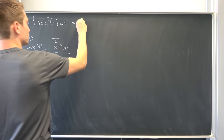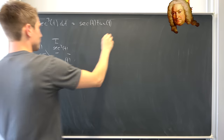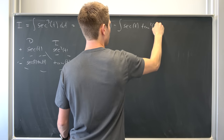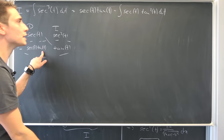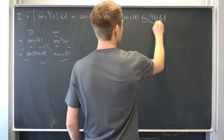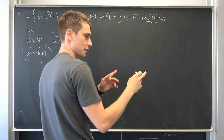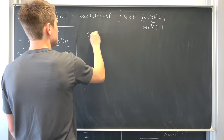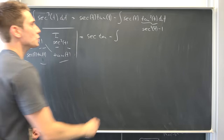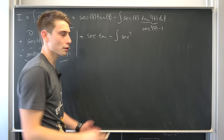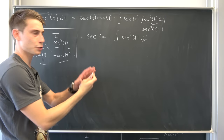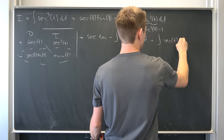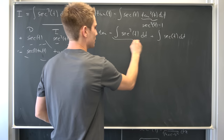So we end up with secant(t) times tangent(t) minus the integral of secant(t) times tangent²(t) dt. But what is tangent squared? We've talked about this before — tangent squared is nothing but secant squared minus one. So overall we end up with secant(t)·tangent(t) minus the integral of secant³(t) dt plus the integral of secant(t) dt. Using the linearity of the integral, this integral of secant³(t) is nothing but our I.